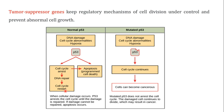When p53 is in a mutated form, and there is DNA damage, p53 cannot arrest the cell cycle, cannot initiate DNA repair, and cannot trigger apoptosis. The cell cycle continues despite the damaged DNA, increasing the chance that cells become cancerous. So mutation in tumor suppressor genes is also a cause of cancer. Both proto-oncogenes and tumor suppressor genes are responsible for normal cell division and differentiation, and problems in either lead to cancer.